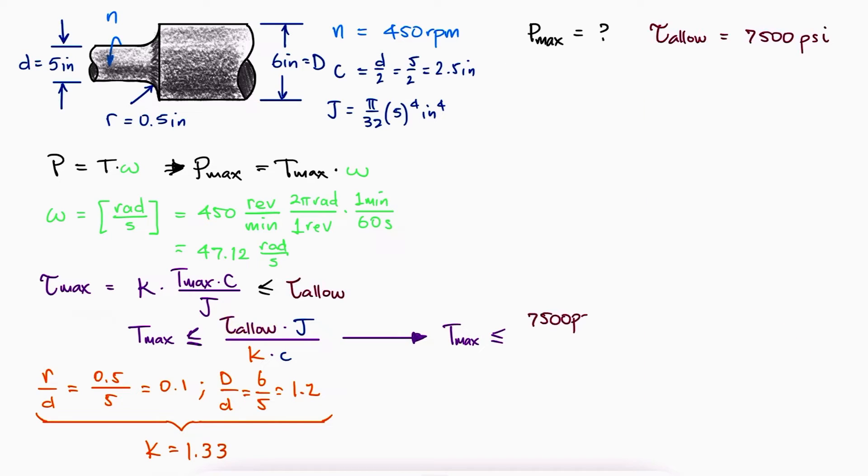Substituting the values, we see that the torque should be no greater than 138 kip inches.